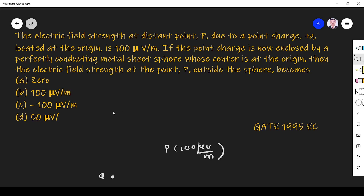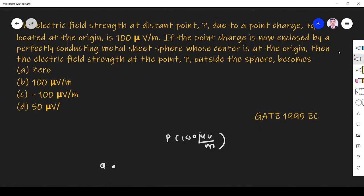If the point charge is now enclosed by a perfectly conducting metal sheet, then one metal sheet is enclosing this charge.